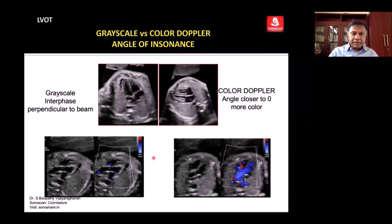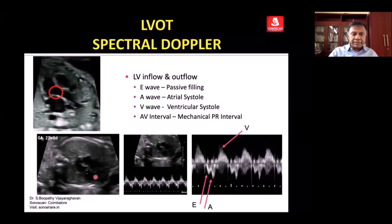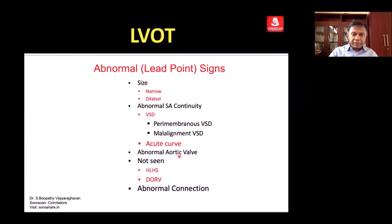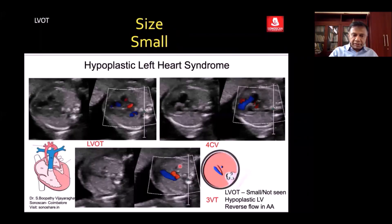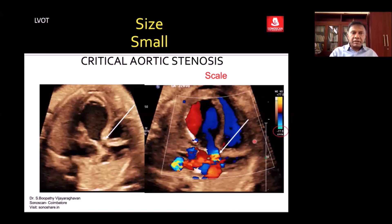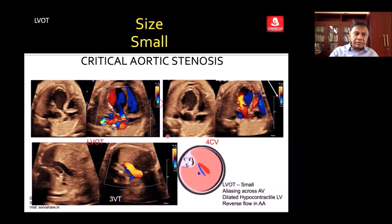Regarding the angle of incidence: here the LVOT is at 90 degrees so you don't get any flow — neither inflow nor outflow. The sample is placed at that junction and you get both LV inflow and outflow. An abnormal aortic valve or the LVOT may not be seen, and there may be an abnormal connection to the left ventricle. Going to the 3VT you see reversal in the aortic arch — the final diagnosis is hypoplastic left heart syndrome. The normal velocity is around 50 to 60 cm/s; if aliasing is still present above 70 cm/s it is abnormal.